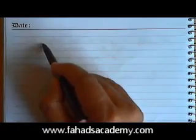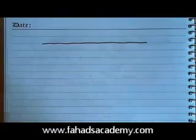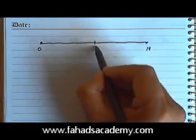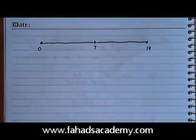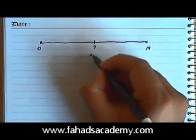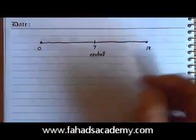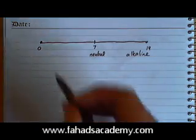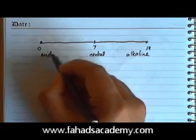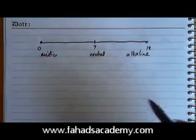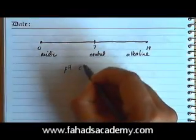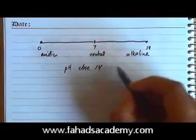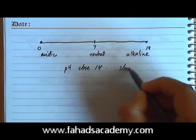If I draw a pH scale — this is 0 on one end and 14 on the other, with 7 exactly in the middle. This is a rough example of a pH scale. A pH of 7 represents a neutral solution. If the pH is between 7 and 14, that represents an alkaline solution, and if it's between 0 and 7, that represents an acidic solution.